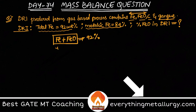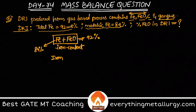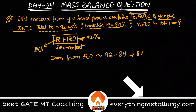So this is the iron content — only iron. They are telling that the metallic iron is 84%. So that means the iron from FeO is contributing to 92 minus 84, which is 8%. So 8% of the iron is actually present in FeO.